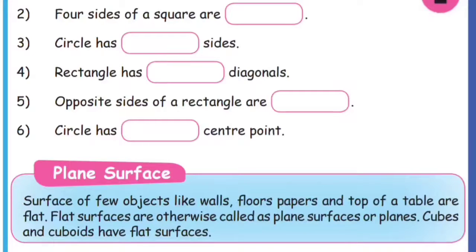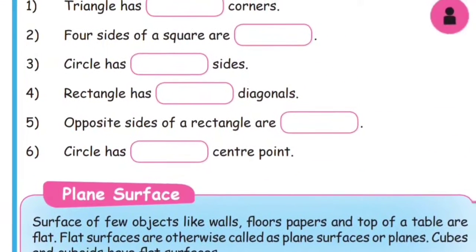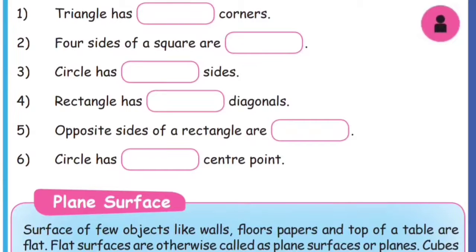We are talking about the shapes. For example, the table is a cuboid shape. Or the pencil — for example, we are talking about the model pencil. The pencil is a triangle shape. So we are talking about the shape of each and every product.